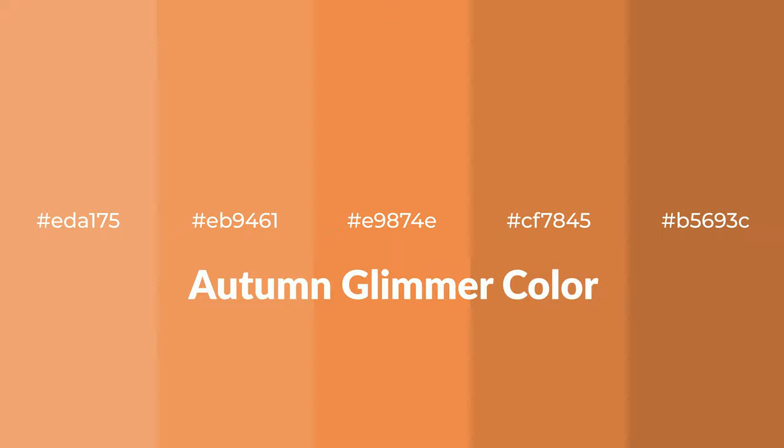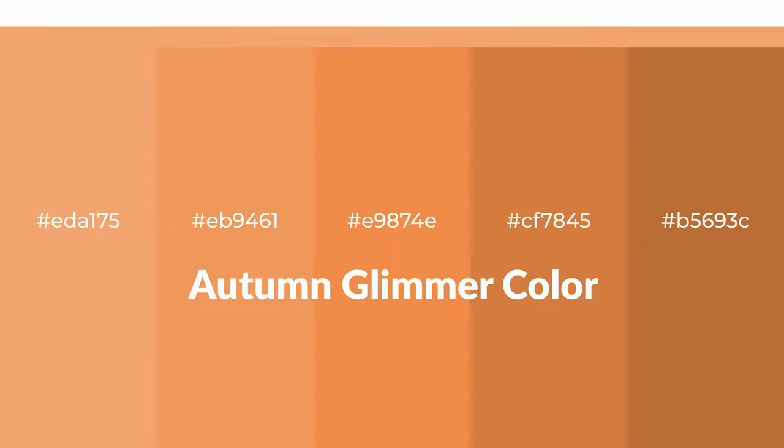Warm shades of Autumn Glimmer color with orange hue for your next project. To generate tints of a color, we add white to the color. Tints create light and exquisite emotions.